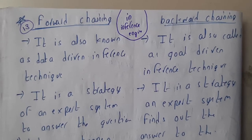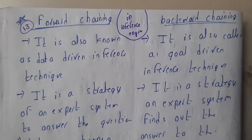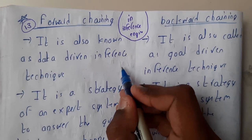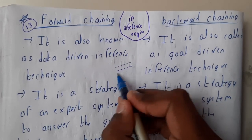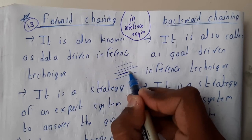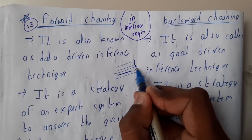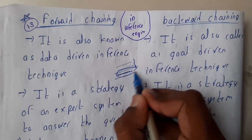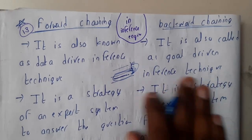Hello guys, we are back with our next lecture. In this lecture let us go through forward chaining and backward chaining. This concept we have already discussed in the first unit, using the same equations: 'Ram is a good boy, all boys are good,' so from that we get 'Ram is a good boy.' That is forward chaining. Backward means from the result you go back to the initial state.